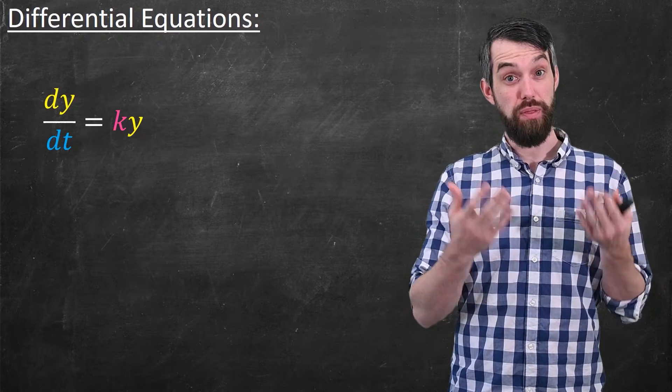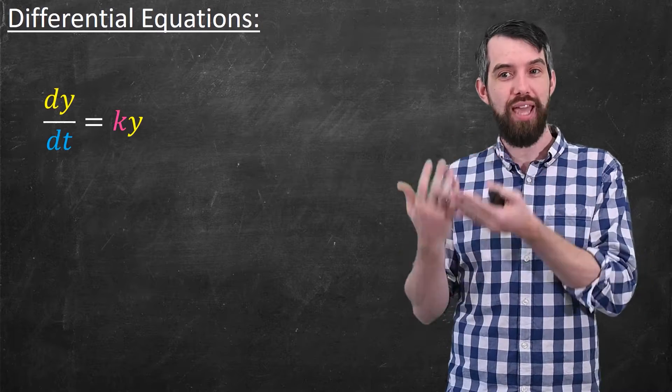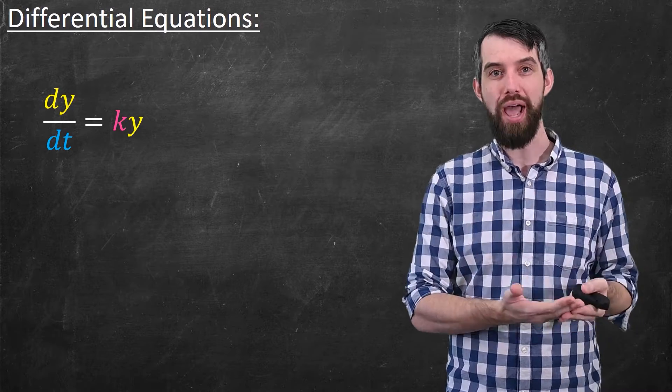So I'm going to specifically focus on the top one. The derivative of y is some multiple k, previously written 3, but it could be any number, multiplied by y.